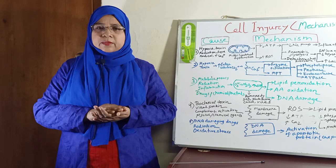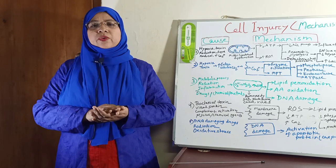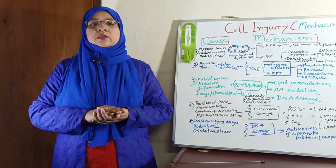There are two morphological patterns of irreversible cell injury, or cell death: necrosis and apoptosis. I will discuss later about the morphological patterns of both reversible and irreversible cell injury.